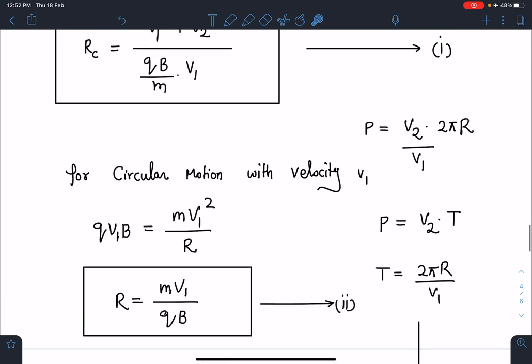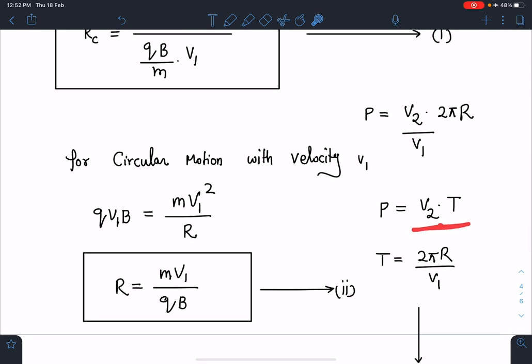And the pitch of this helix I can similarly write as P = v₂T, where T is the time in which it completes one circle. This time T I can write as 2πR/v₁.